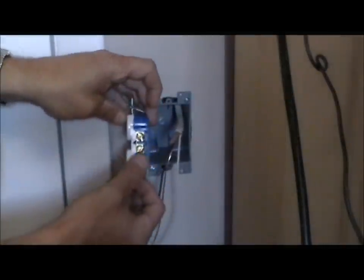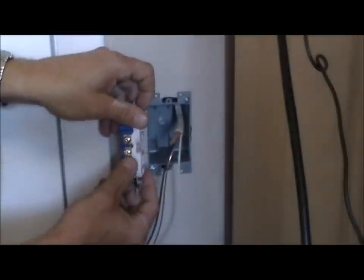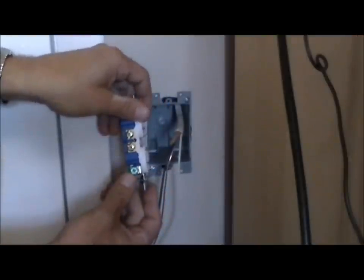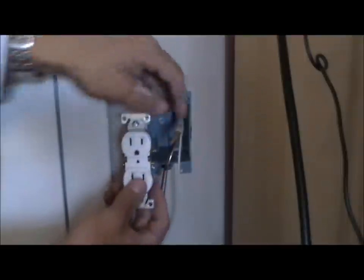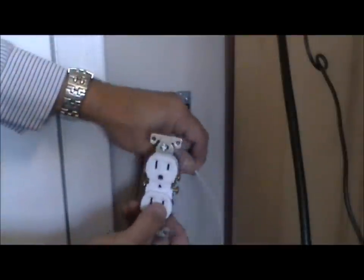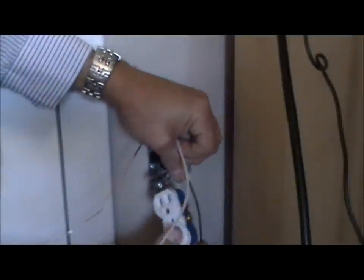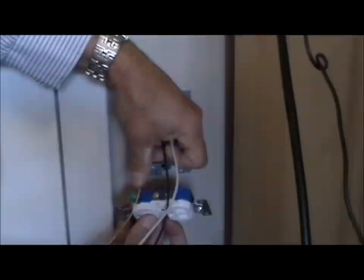We're going to install this 15 amp outlet. You'll see you have a gold side, a silver side, and a green ground screw. Now what you want to do is the white goes to silver, black goes to gold, and green goes to ground.